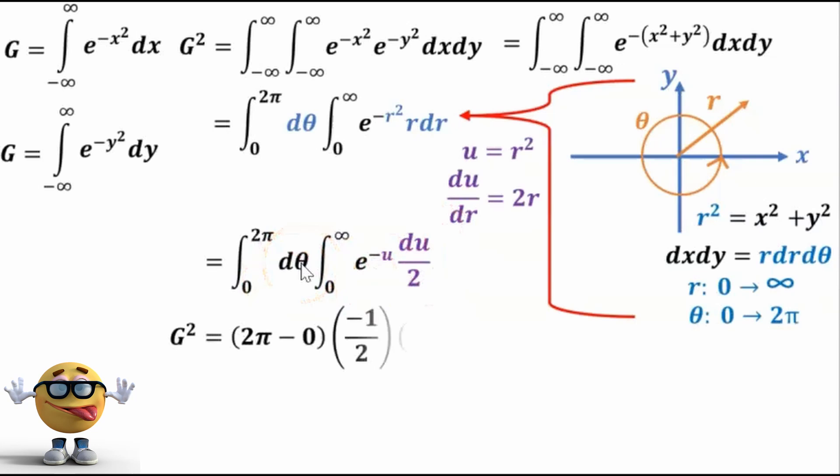we can evaluate the integral. So the integral of d theta is just theta, and then we're going from 2 pi to 0, so 2 pi minus 0. And now here, we'll pull out the 1 half, and the integral of this is itself, right?